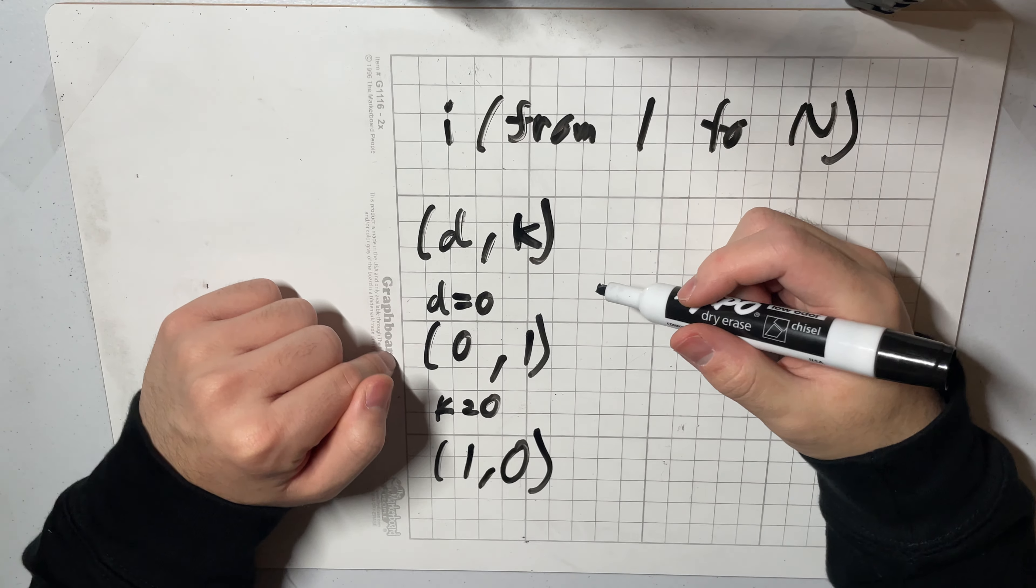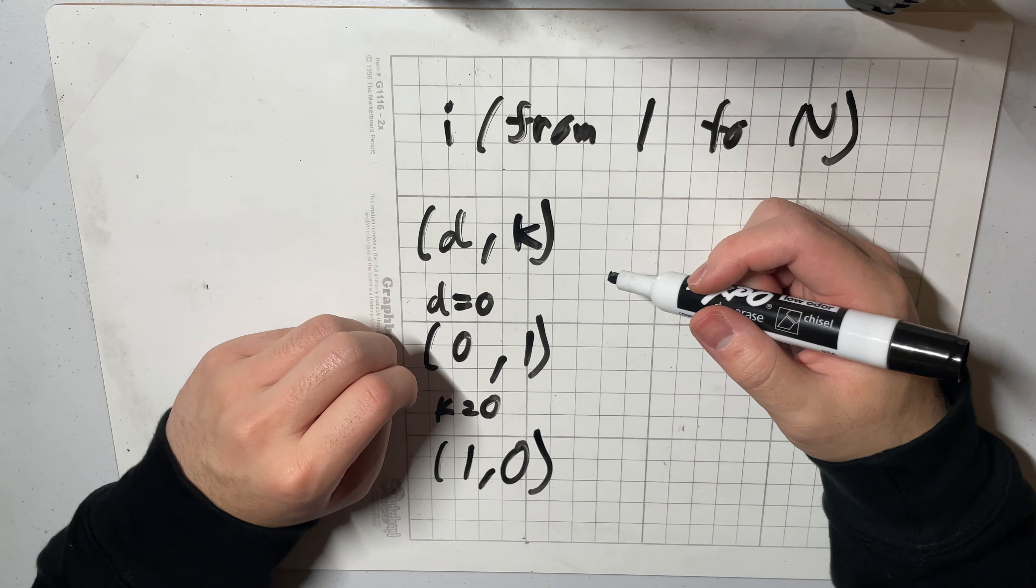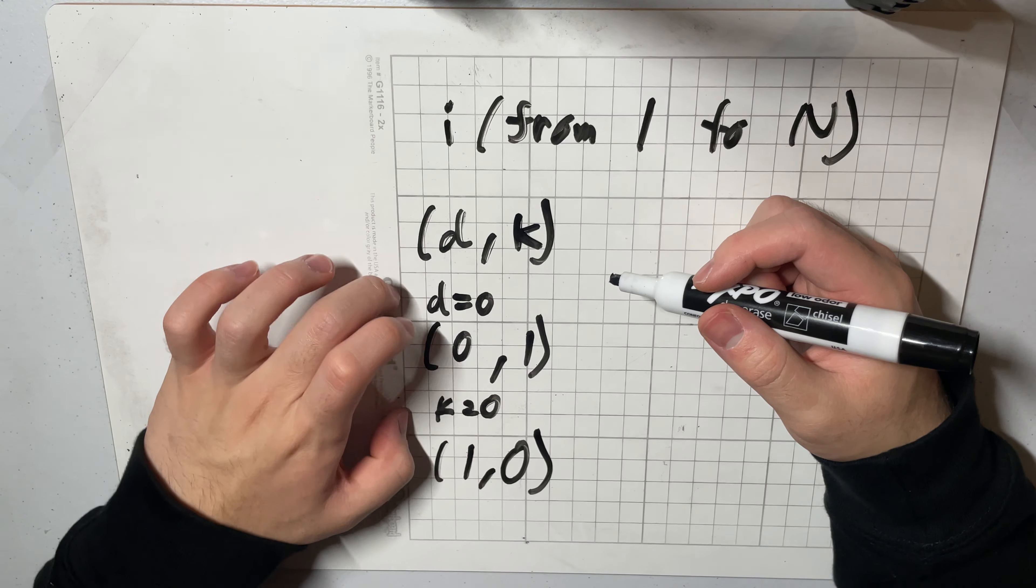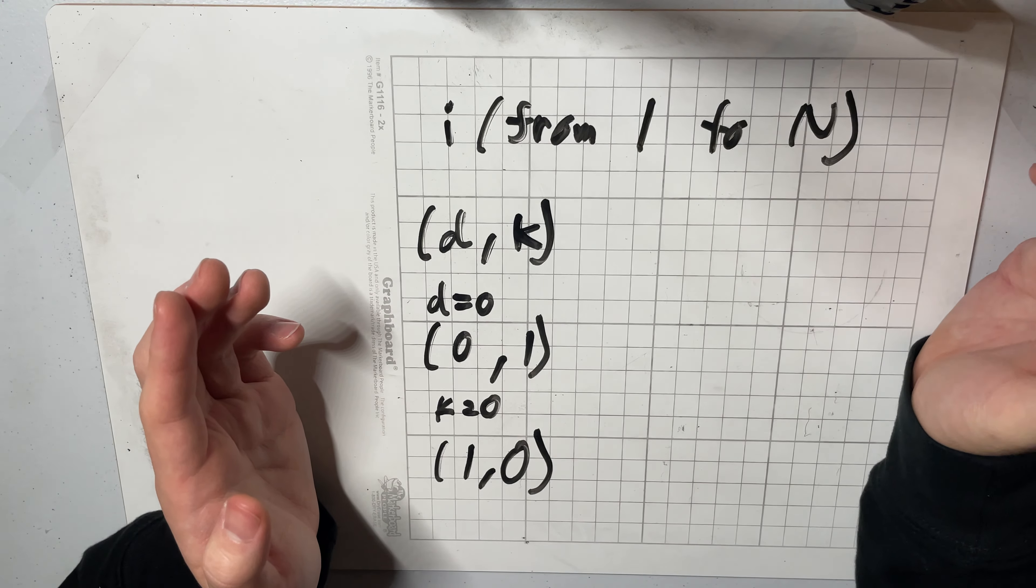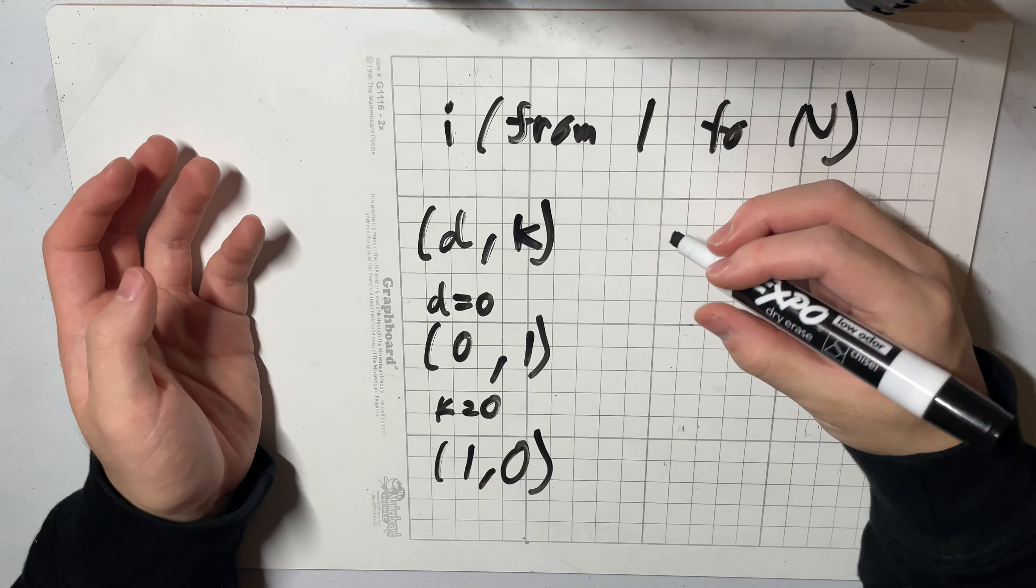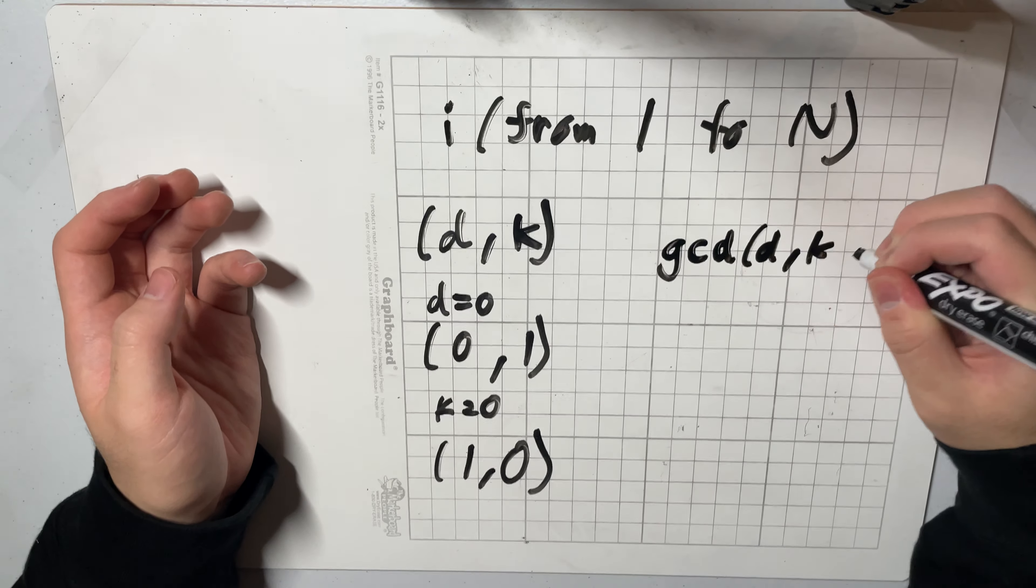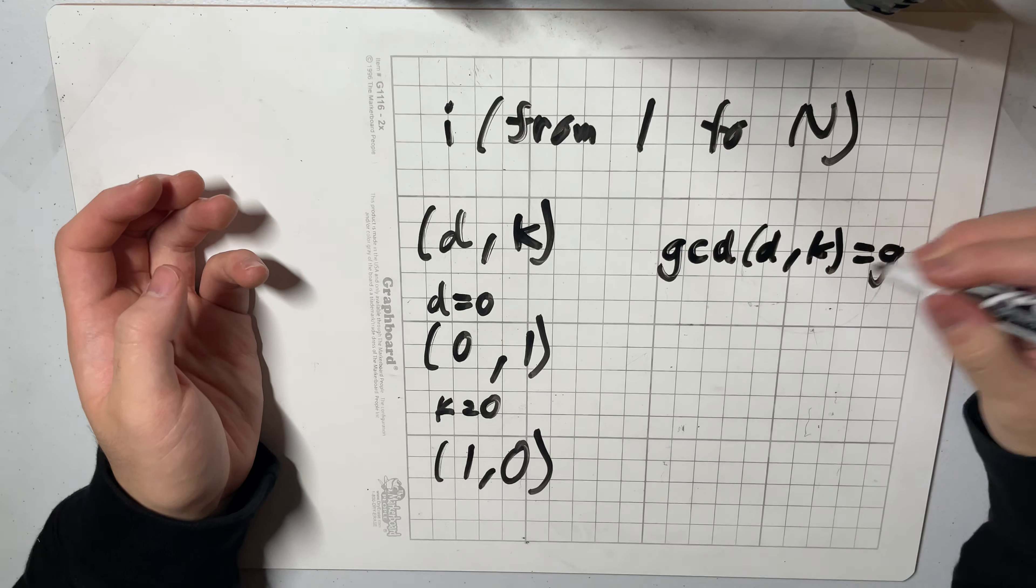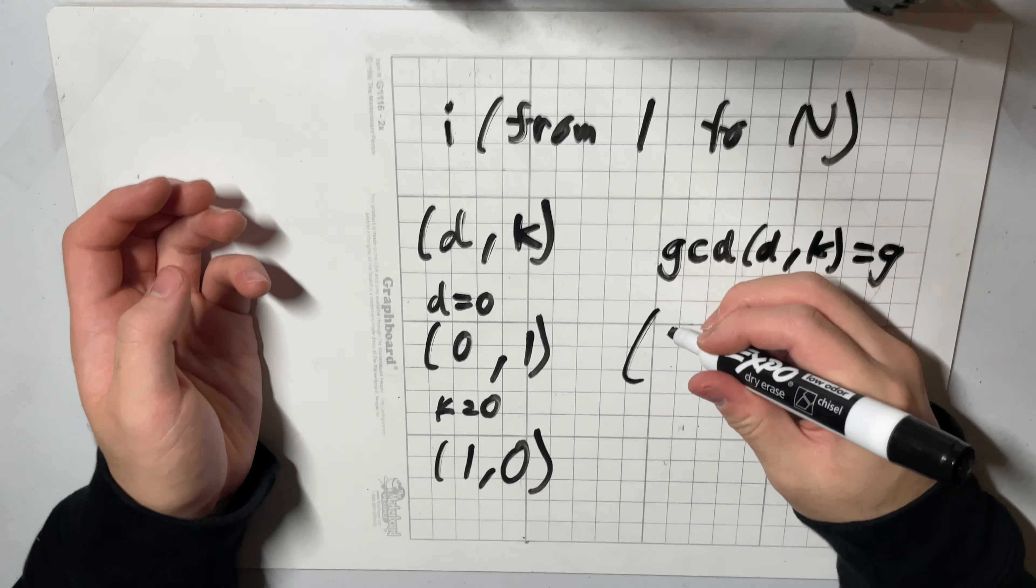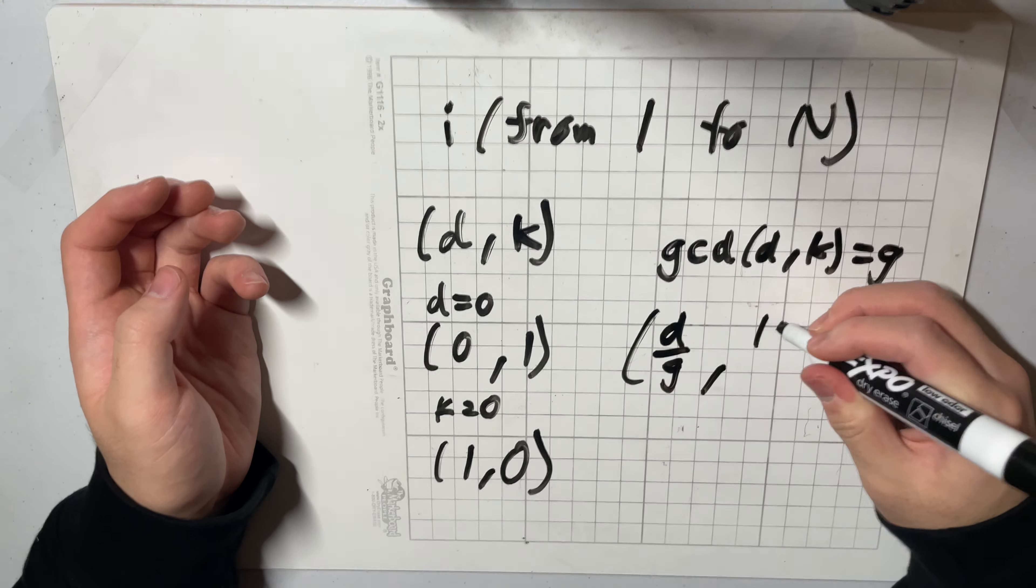And so if neither d or k is equal to zero then we know that they both have to be positive. So then we take the gcd of d and k and if we say this is equal to g then our reduced pair will be d over g and k over g.